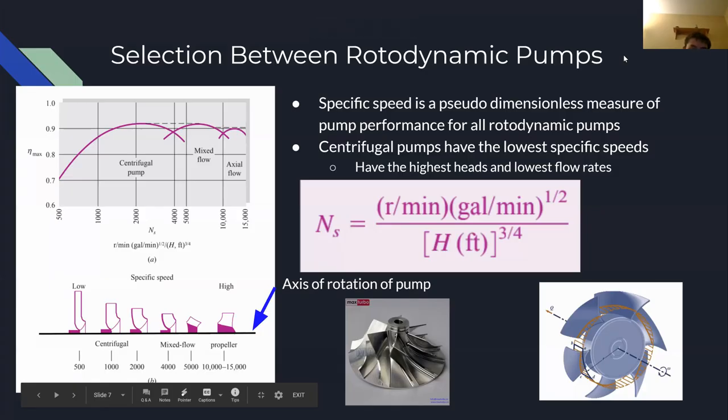Centrifugal pumps are just one of many different types of rotodynamic pumps, and these pumps are differentiated by the specific speeds at which they most effectively operate. Centrifugal pumps have the lowest specific speeds, which means they operate best at high output heads and low output flow rates.